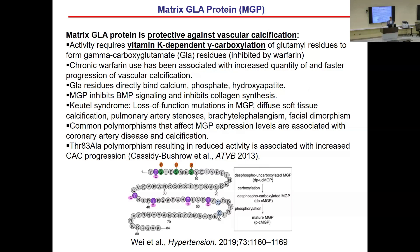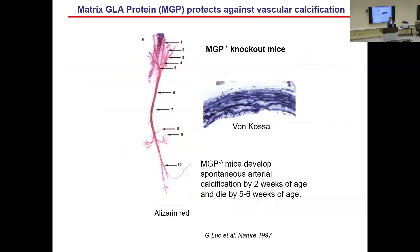From a common disease perspective, polymorphisms identified in the MGP locus are associated with different functions and levels of MGP, and these polymorphisms are associated with cardiovascular disease, coronary artery calcification, and progression of coronary artery calcification. So studying MGP is relevant not just for the rare disease of Cudel syndrome, but also for more common forms of cardiovascular disease. In the knockout mouse model studied quite a bit in our laboratory, by two weeks of age these MGP-deficient mice develop diffuse arterial calcification. By five to six weeks of age, the aorta ruptures like a bone and the mice die.